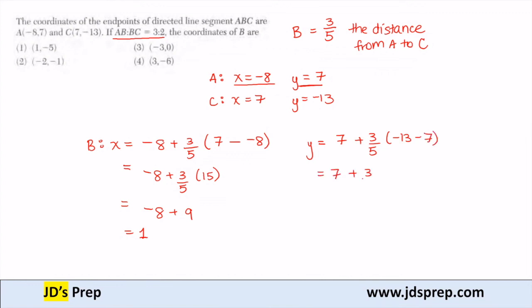That gives me 7 plus three-fifths of -20, which is 7 plus -12, which is -5.